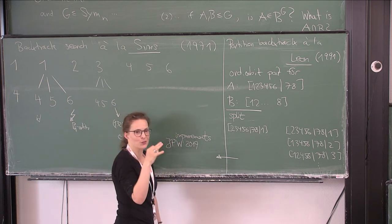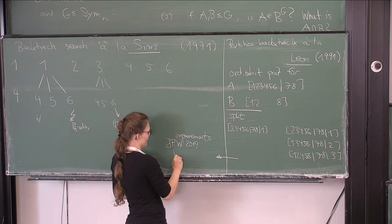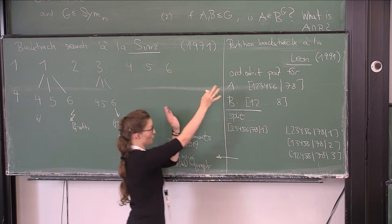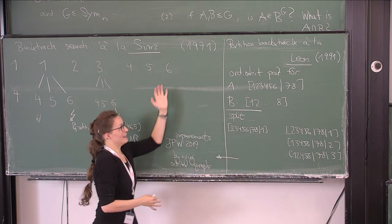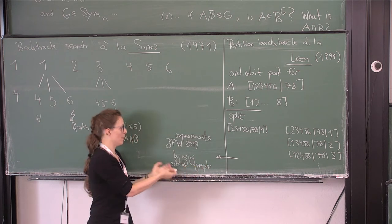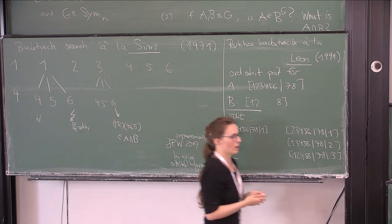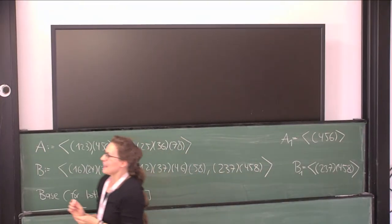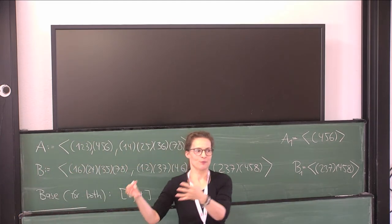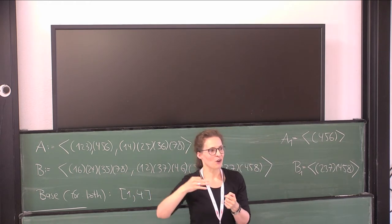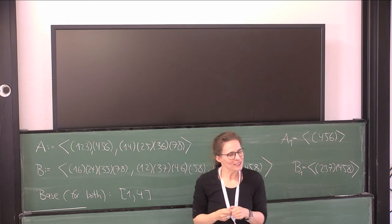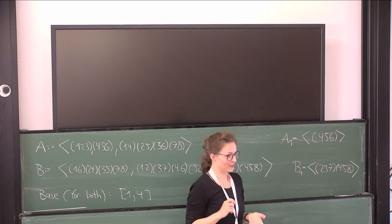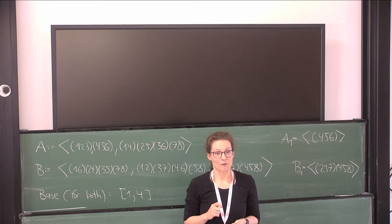We chose some hard problems for our experiments and were surprised how much improvement could be gained by just using some graphs for some groups. Orbital graphs are not even useful if the group is highly transitive, but they turned out very useful in practice for many problems. We still respected Leon's framework — we said let's use this infrastructure and just get refiners informed by graphs so the search becomes quicker.